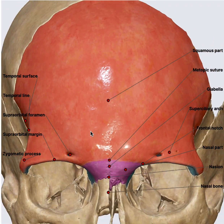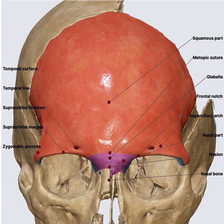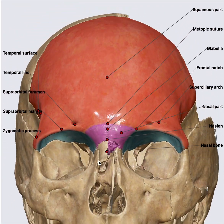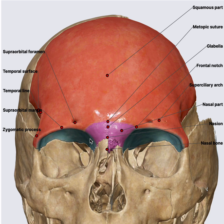From an ENT perspective, the two important things are the supraorbital part and performing trephine or local flaps from the forehead, or for skin lesions. It is important to achieve good anesthesia by infiltrating this area.